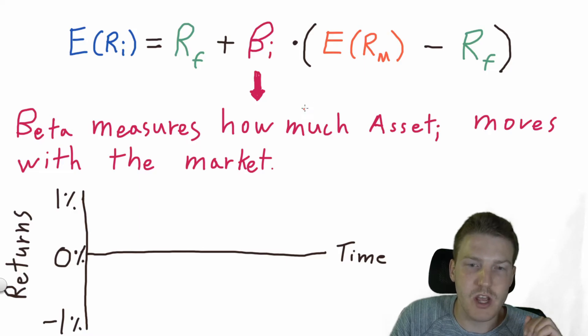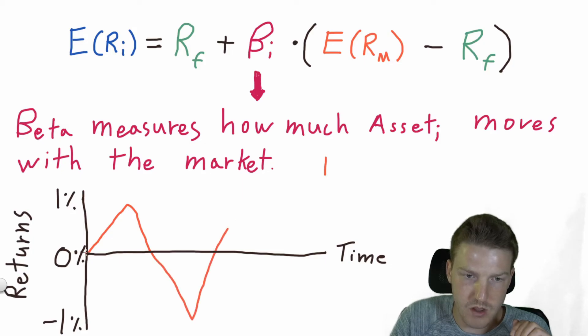Beta measures how much asset I moves with the market. The market always has a beta of one because it moves one for one with itself. So let's say beta of the market is one, and this is the return of the market plotted against a period of time. So the price of the market goes up, and then it goes down, and then it goes up, and then it goes down again.